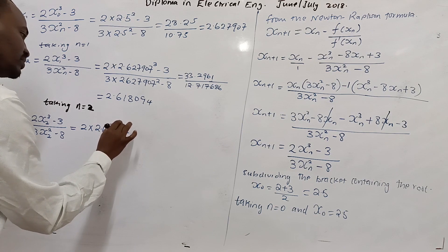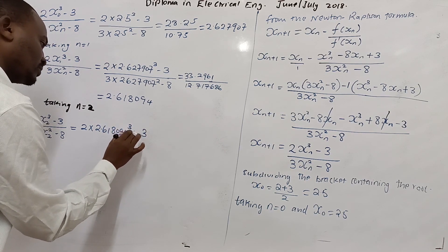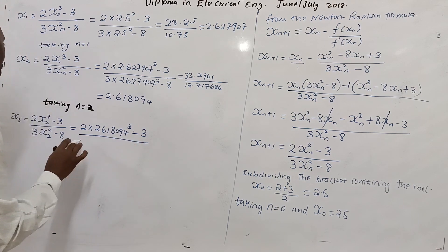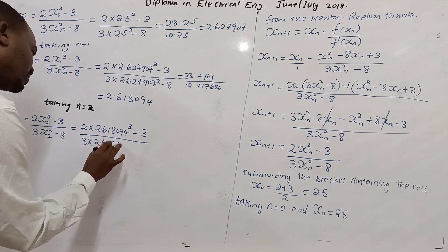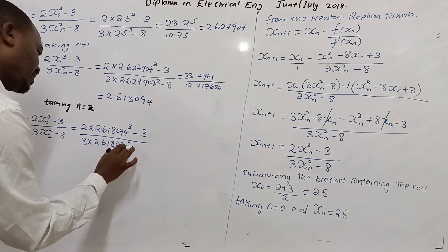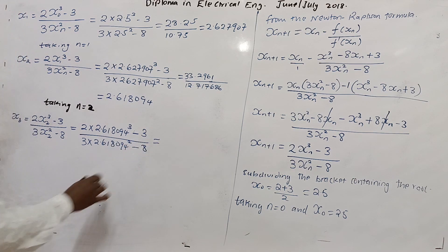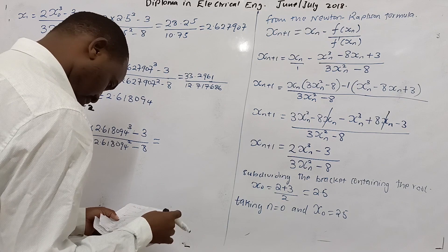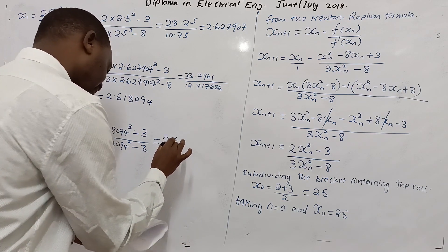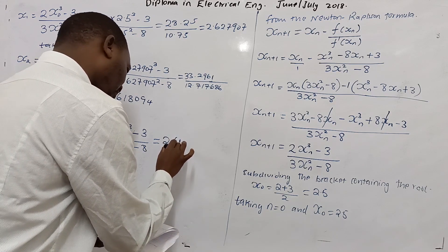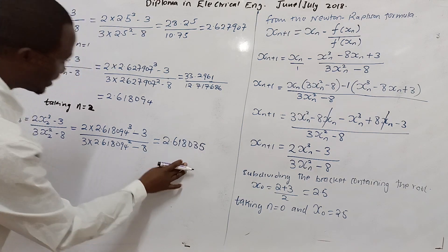So x₃ = (2(2.618094)³ - 3) / (3(2.618094)² - 8). I will not punch the calculator for you — you can do that yourself. The answer comes out to 2.618035. So now we are correct to how many decimal places? Comparing x₂ = 2.618094 and x₃ = 2.618035 — these agree to 2.618, so we are correct to three decimal places.